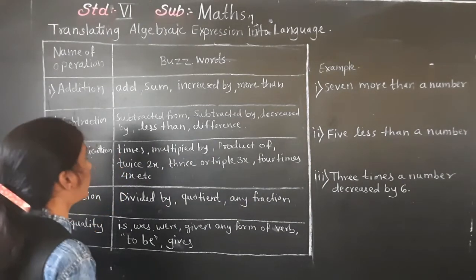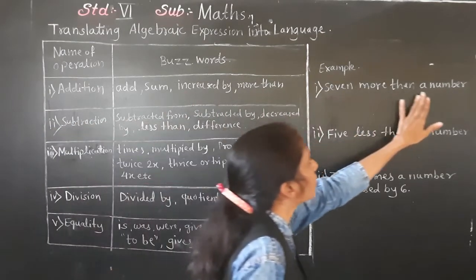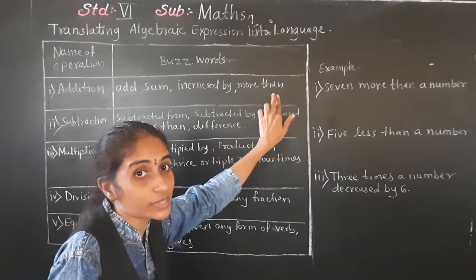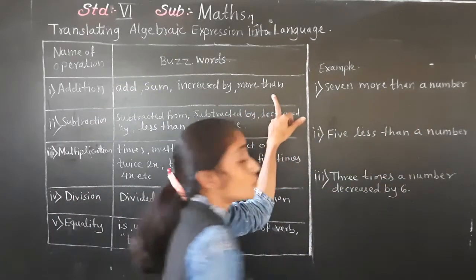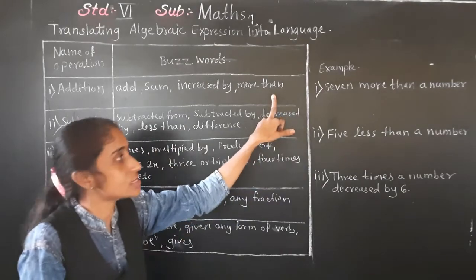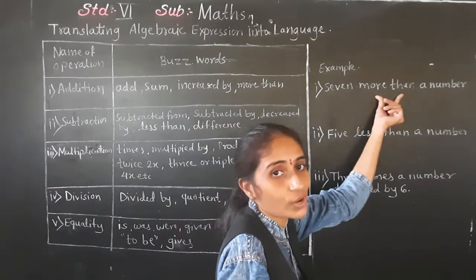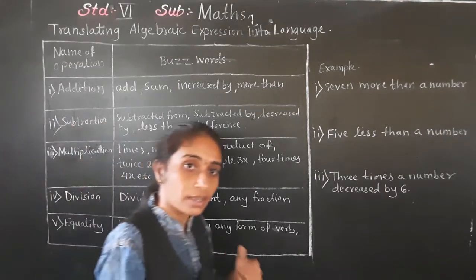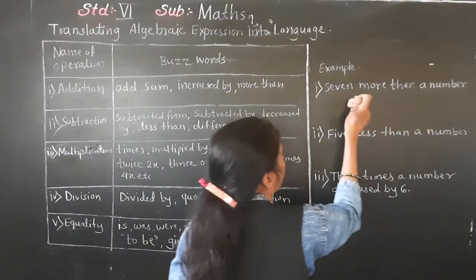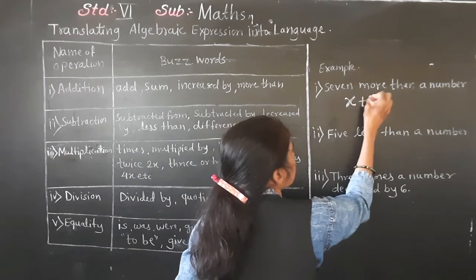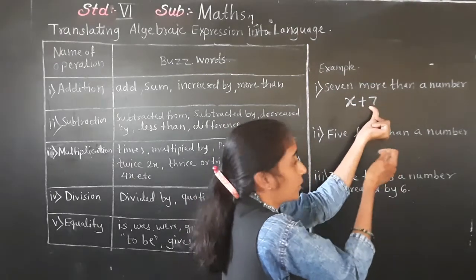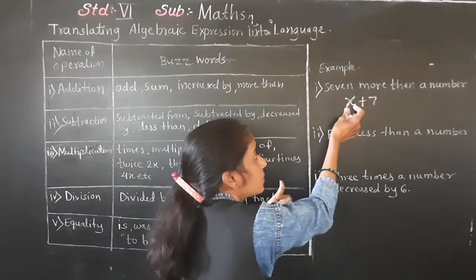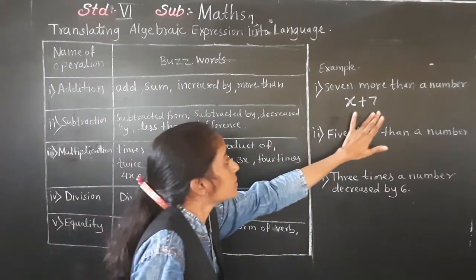Example 1: Seven more than a number. 'More than' is used for addition, so we use addition here. A number we don't know — we consider x. Seven more than a number means x plus 7. Seven is more than a number, so we write first that number x, then plus seven: x plus 7.